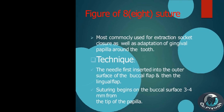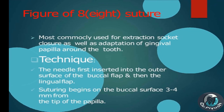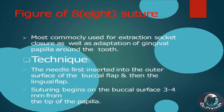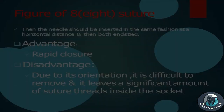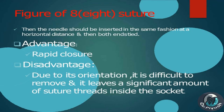Figure-of-8 suture: most commonly used for extraction socket closure as well as adaptation of the gingival papilla around the tooth. Technique: the needle is first inserted into the outer surface of the buccal flap and then the lingual flap. Suturing begins on the buccal surface, 3–4 mm from the tip of the papilla. The needle is then inserted in the same fashion at a horizontal distance and both ends are tied. Advantage: rapid closure. Disadvantage: due to its orientation, it is difficult to remove and leaves a significant amount of suture threads inside the socket.